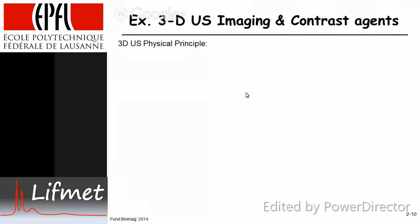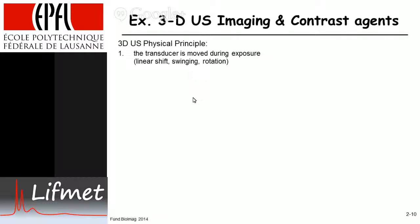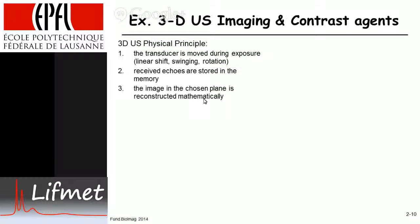Further examples: 3D ultrasound. I'm not going to go into all the math of how an image is reconstructed, just to give you a gist of the principle. During the scan the transducer is moved — you can give it a linear shoot, swing, shift, rock, swinging, or rotation. The received echoes are then stored in memory, and based on the movement of the head being done, the image is reconstructed mathematically. That's roughly the principle.